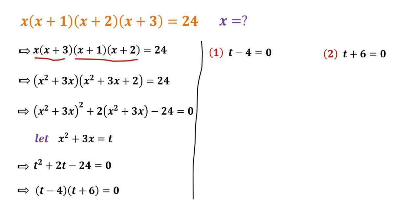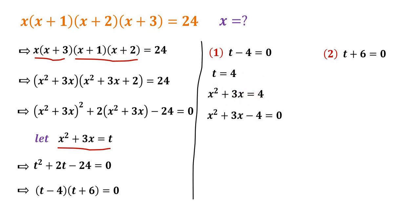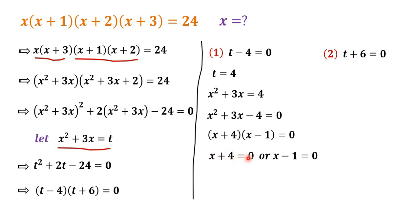We will look at both cases separately. In the first case, t is equal to 4. Remember, we have x squared plus 3x equal to t, so x squared plus 3x is equal to 4. Then we have x squared plus 3x minus 4 is equal to 0. To solve this, we factorize negative 4 as 4 times negative 1, giving x plus 4 times x minus 1 is equal to 0. So x is equal to negative 4 or x is equal to 1.